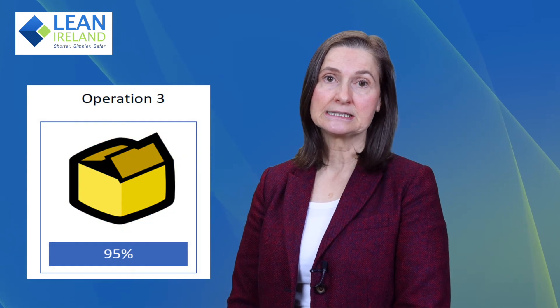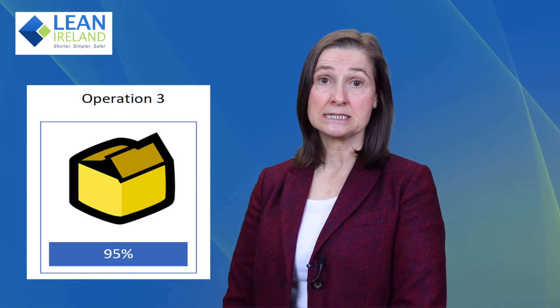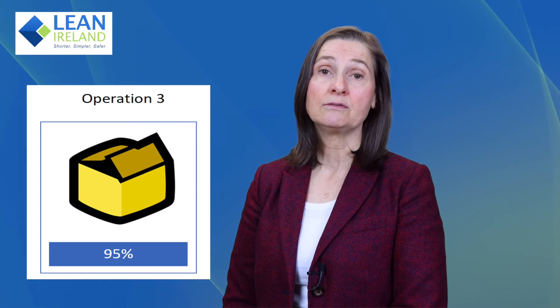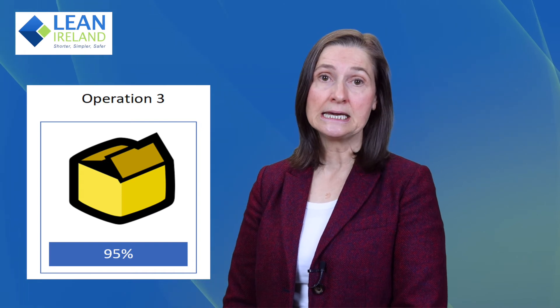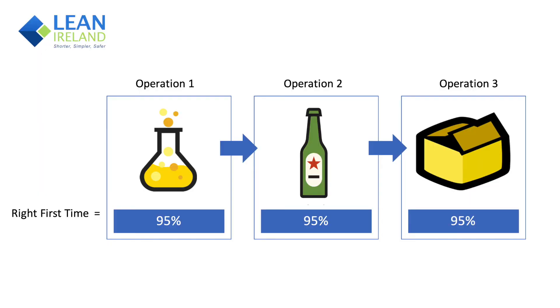If we take for example a manufacturing process that has three steps, we may believe that the yield of the process as measured in the final third step is 95%. However, if we examine the yield at each individual process step, that may also be 95%. In this particular case, the true yield from the process is only 86%.